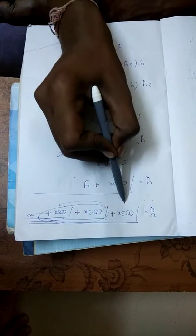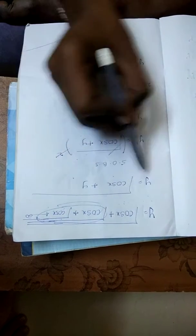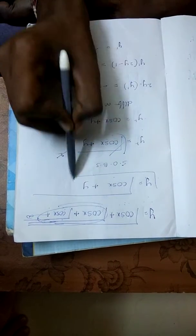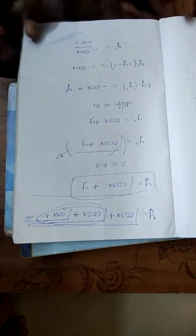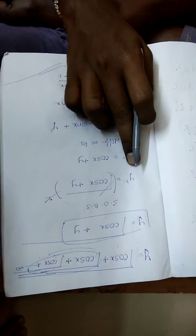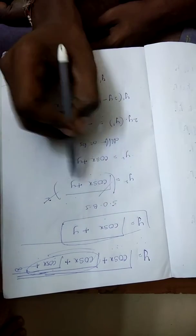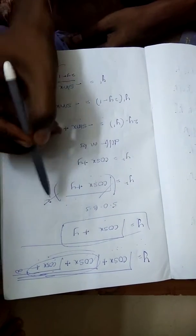So y is equal to root of cos x plus y. We square both sides, which means y squared is equal to the quantity root of cos x plus y, whole square.